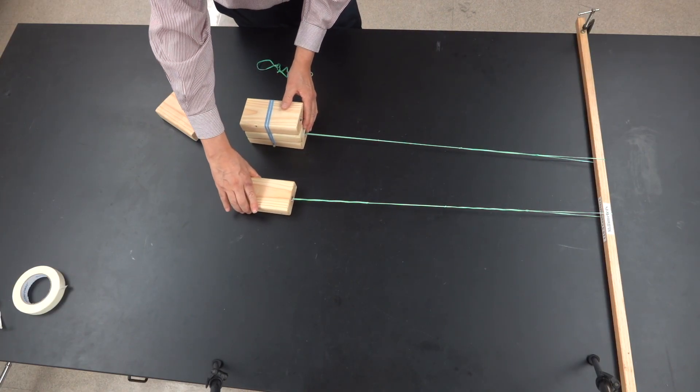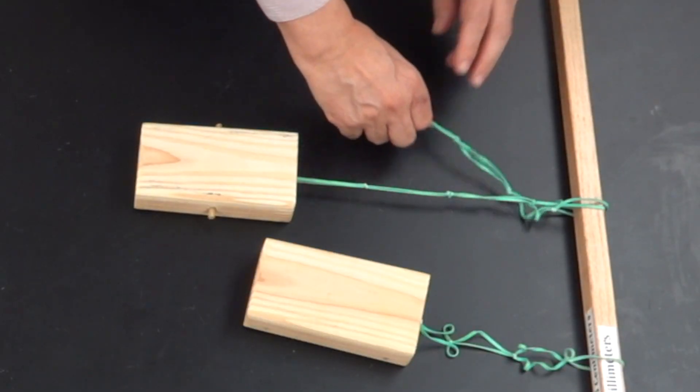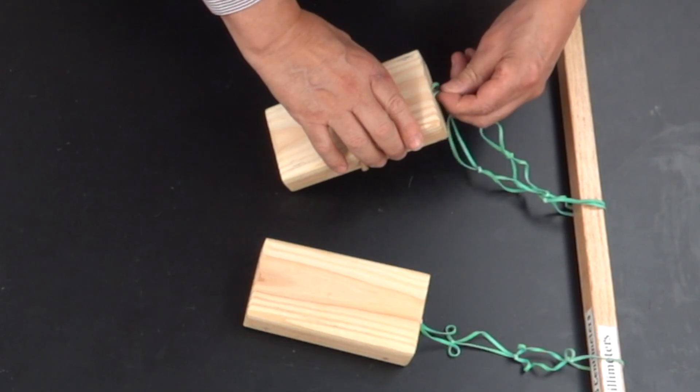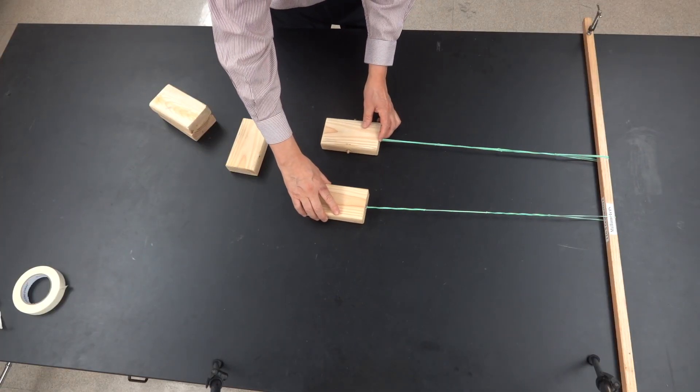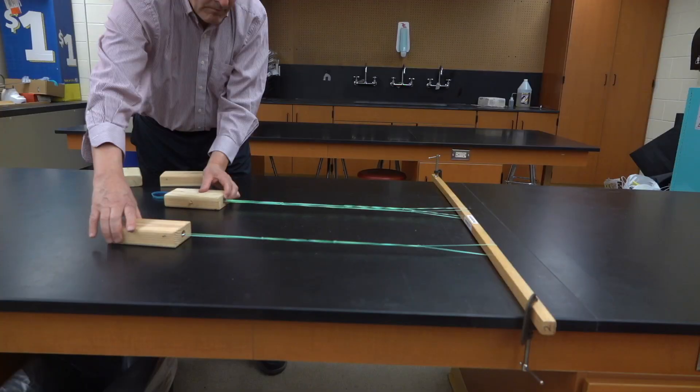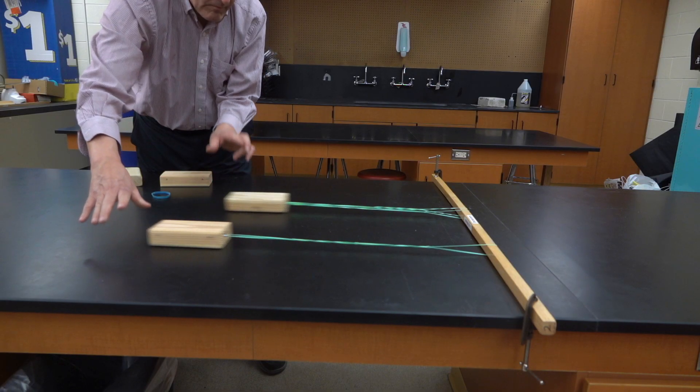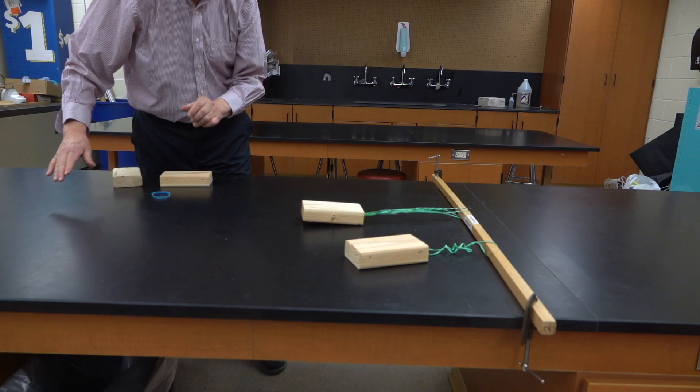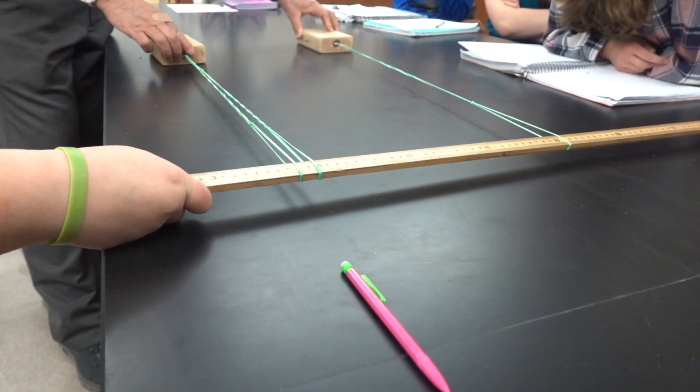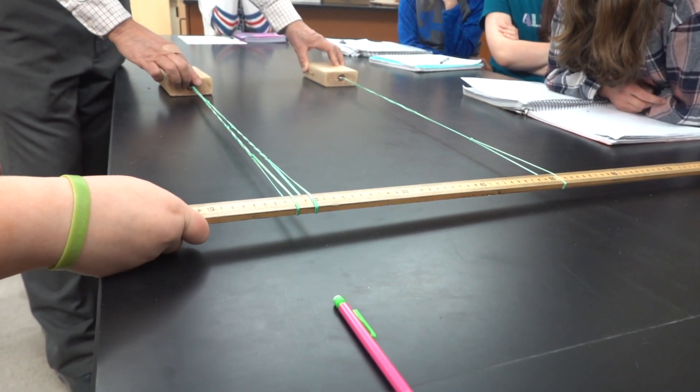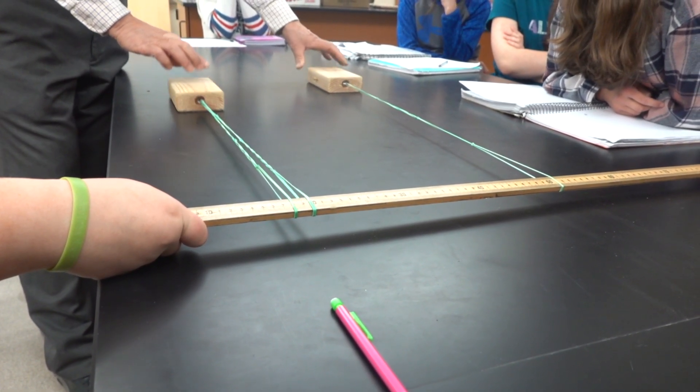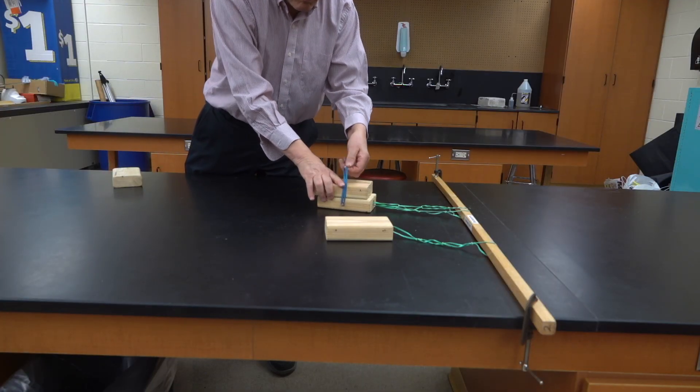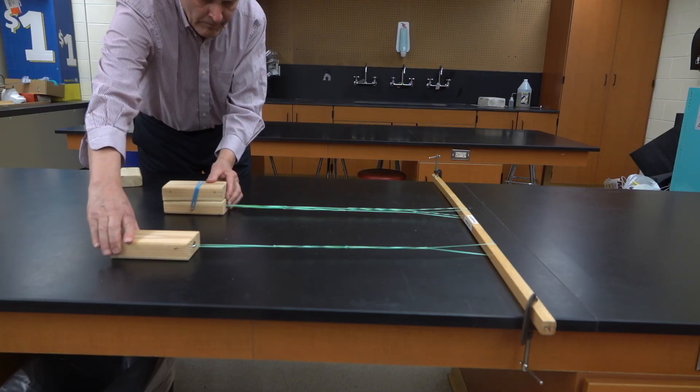Here's triple the mass. Let's go back to the same mass, but double the rubber bands and see how that affects it. Now the next step is to double the mass on the double rubber band. See how they compare?